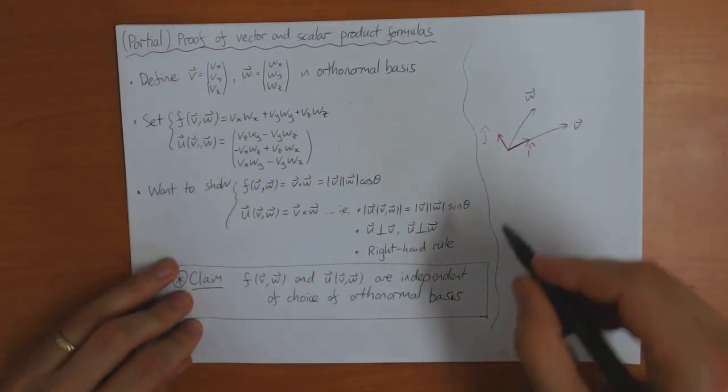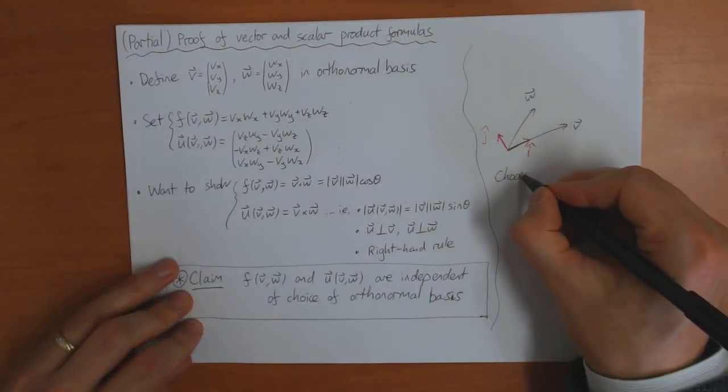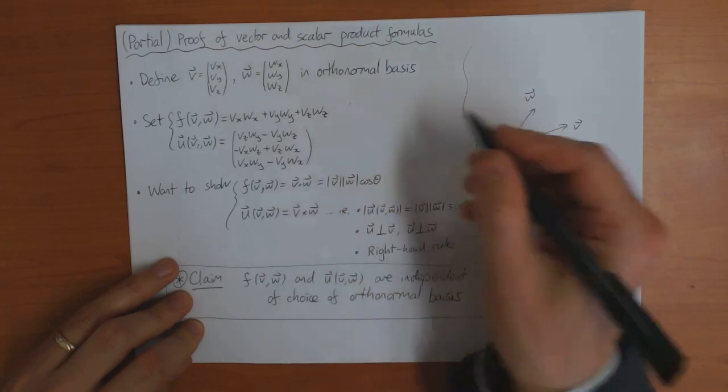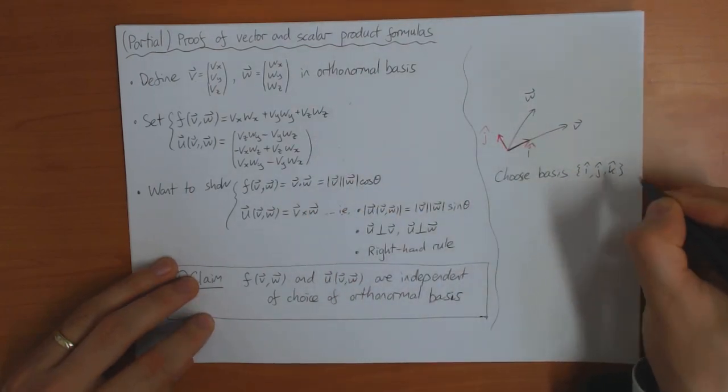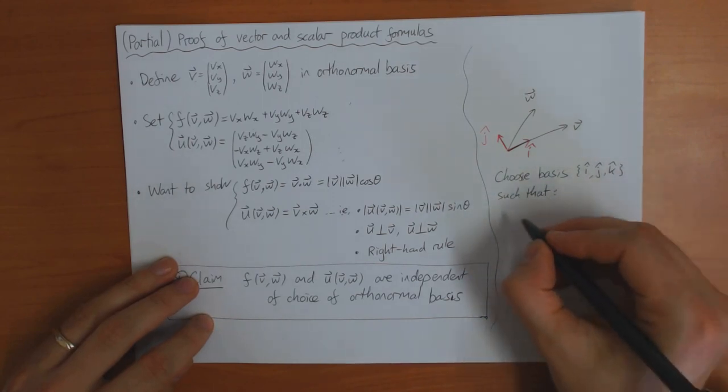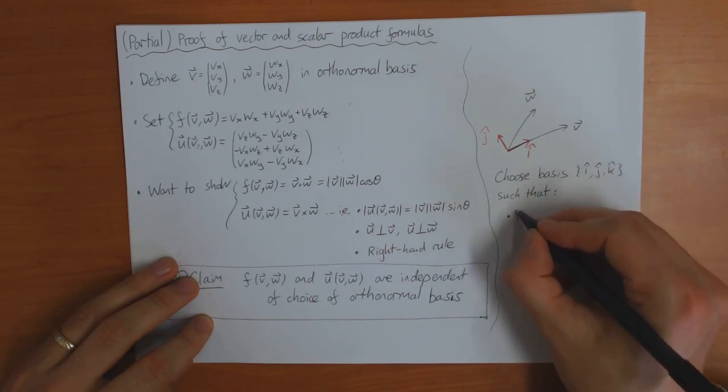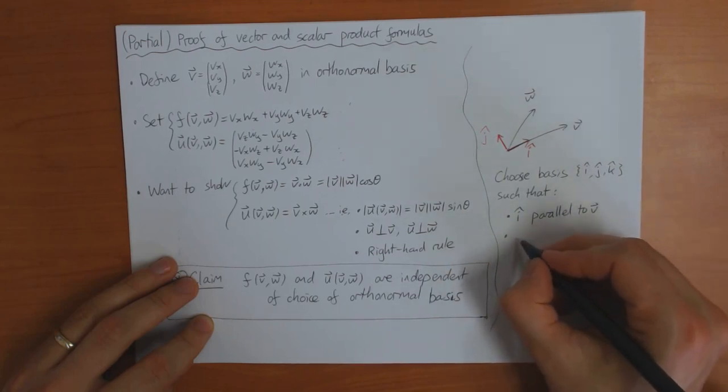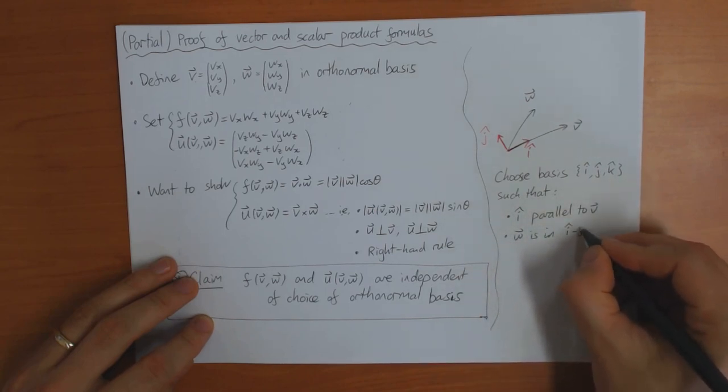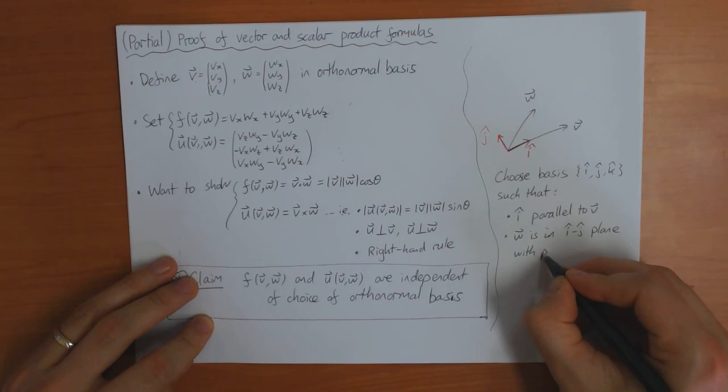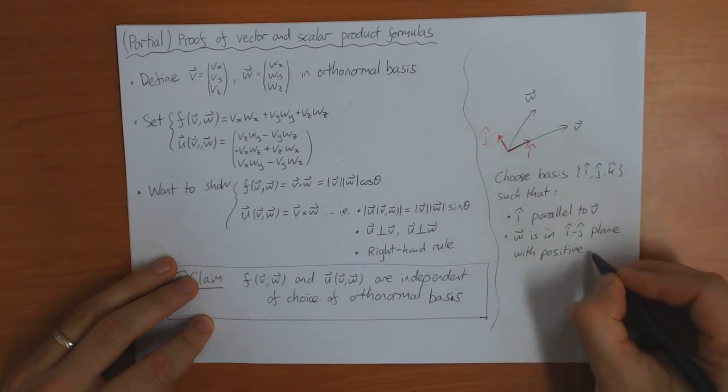Okay, so let me just write that up here. So we choose a basis in three dimensions. You have to be in three dimensions for this to work. So you prove the basis i, j, k such that the first property is that i is parallel to v. The second property is that w is in the i, j plane with positive j component.